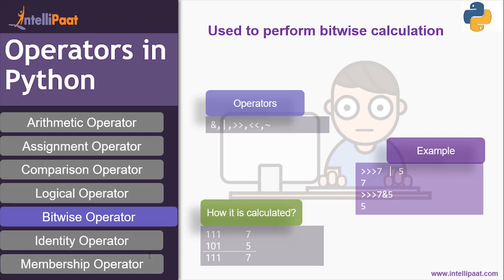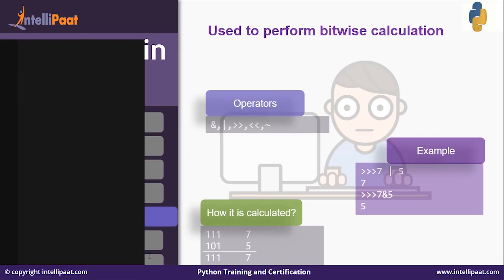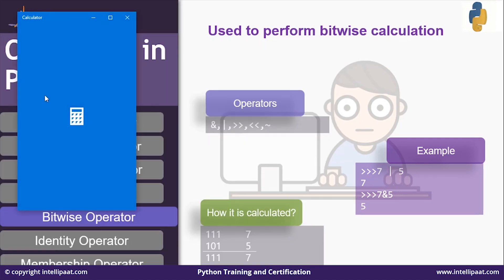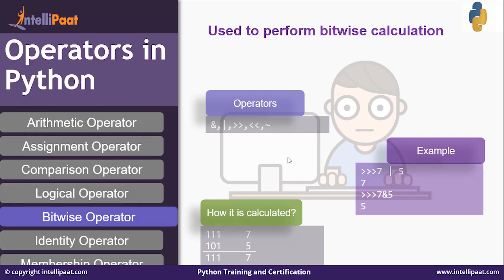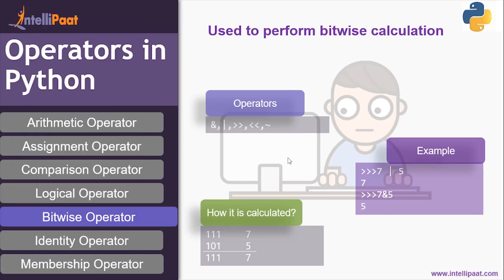You can verify this using the calculator. Open a programmer calculator — 7 OR 5 gives the output as 7. Correct! Next, the tilde operator or NOT operator is used to perform a NOT operation.